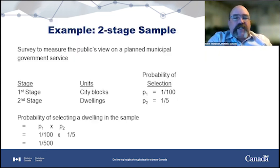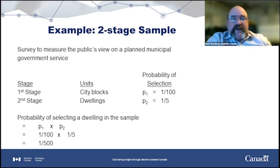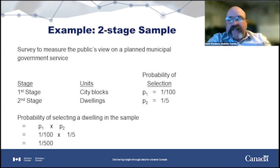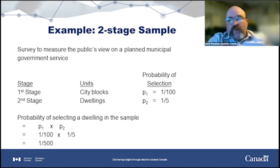Here's a two-stage cluster example: a municipal government wants to survey public views on a community project. In the first stage, they select every hundredth city block using systematic sampling. Once a block is selected, interviewers go around and select every fifth household. That gives a one-in-100 selection of city blocks and a one-in-five selection of dwellings — so the chance of any one dwelling being selected is one in 500.